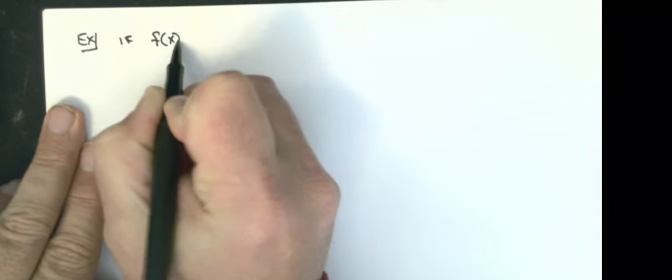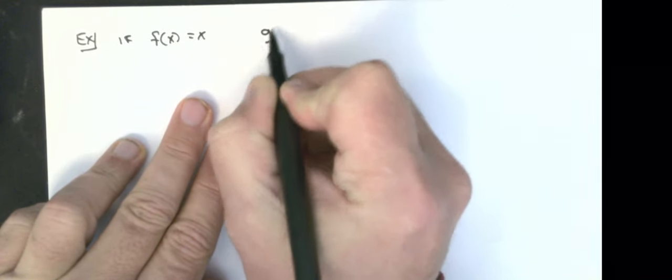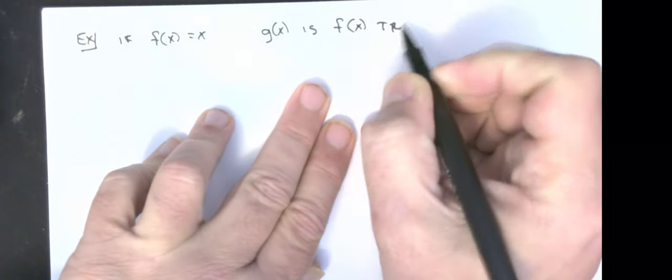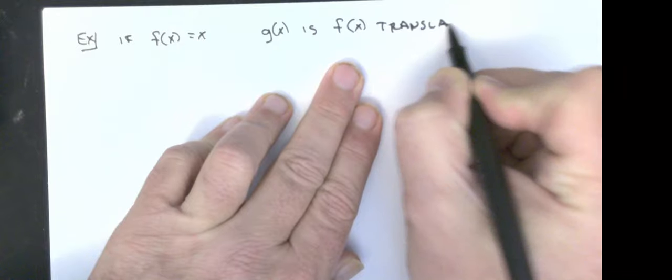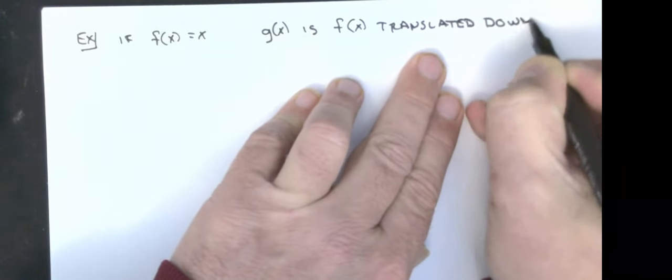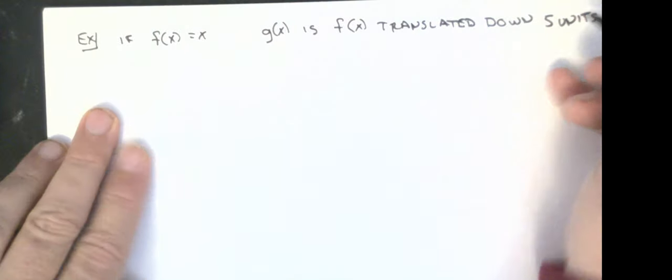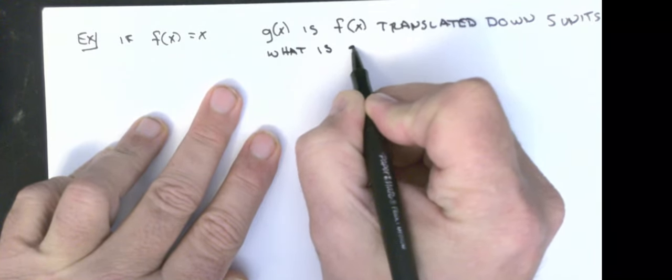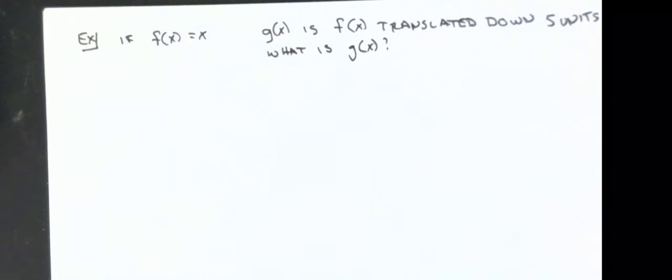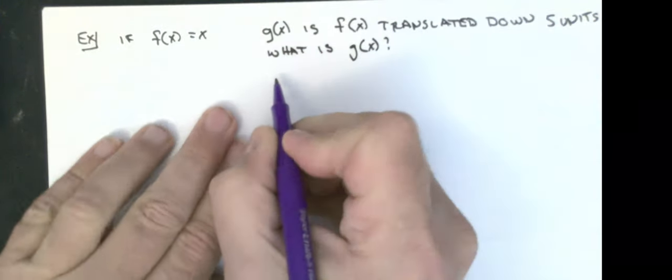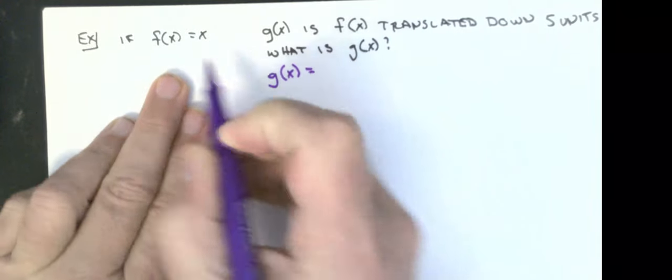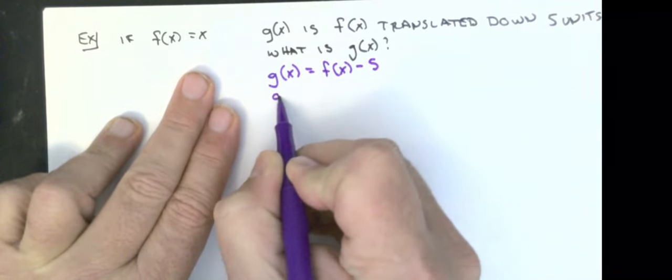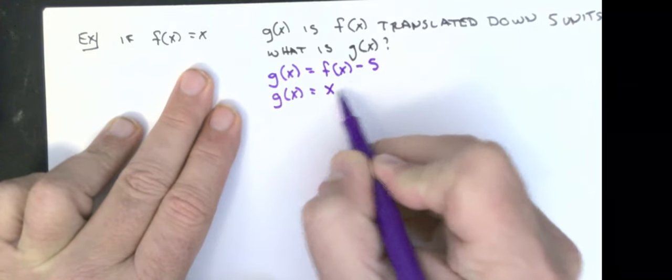If f(x) = x, and g(x) is f(x) translated down five units. What is g(x)? Well, my g(x) is going to be equal to my f(x) - 5, so my g(x) = x - 5.